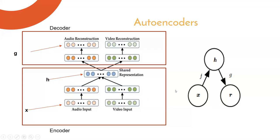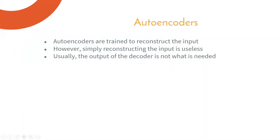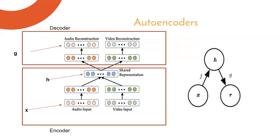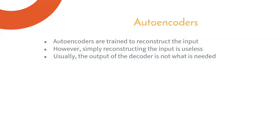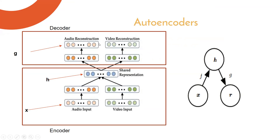The way an autoencoder is trained: we give it an input and ask it to reconstruct the input. With two inputs, we ask it to reconstruct both audio and video. However, merely reconstructing the input is trivial and useless — the only interest is in finding the hidden representation, not simply copying the input.